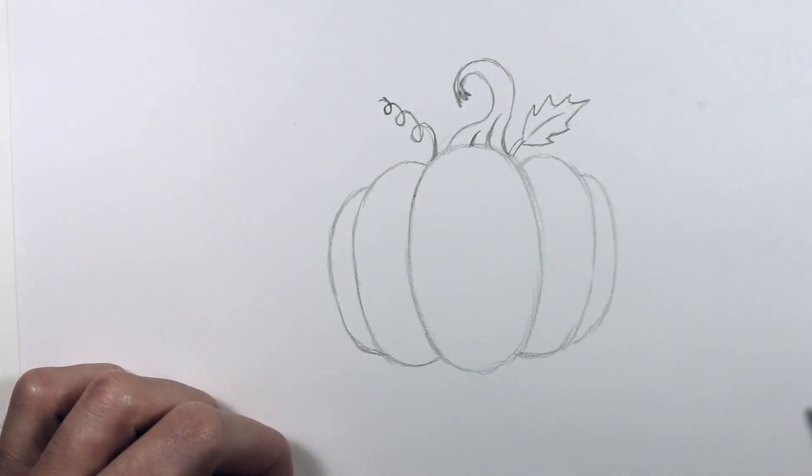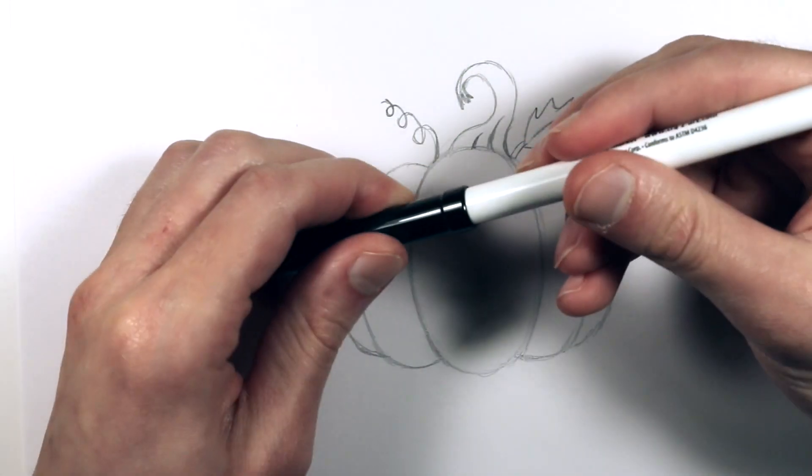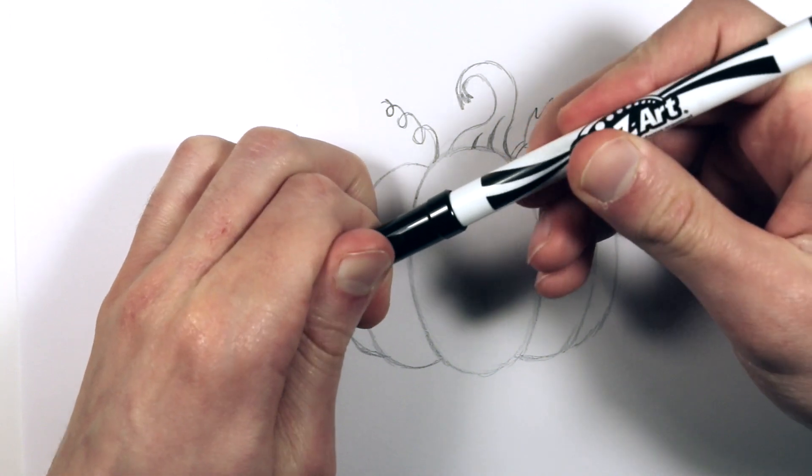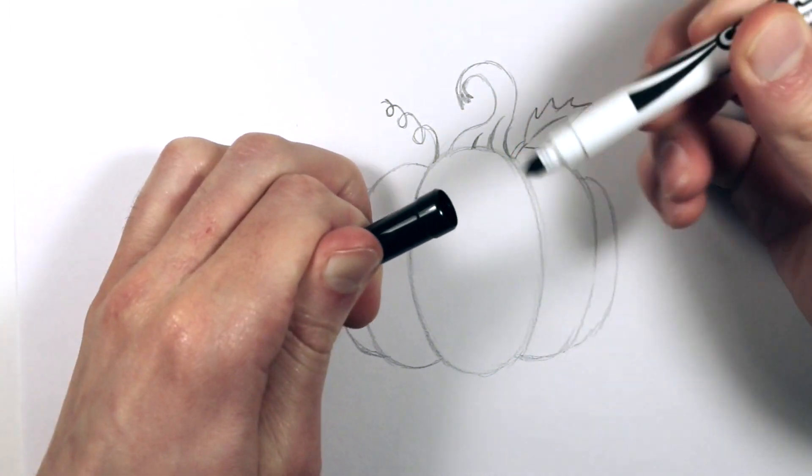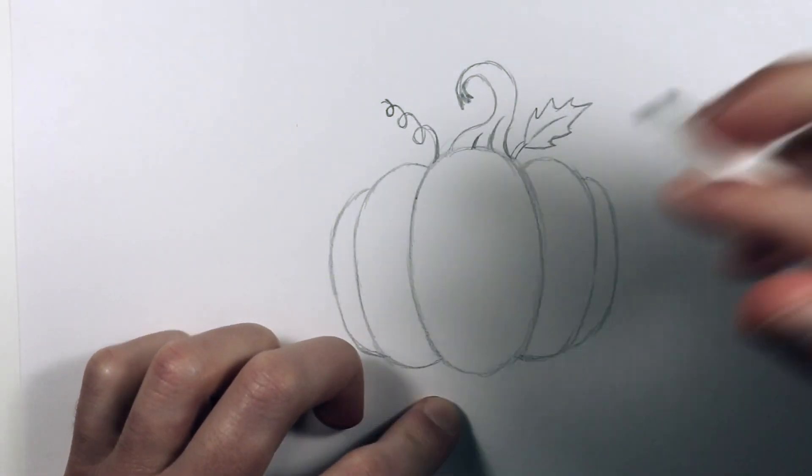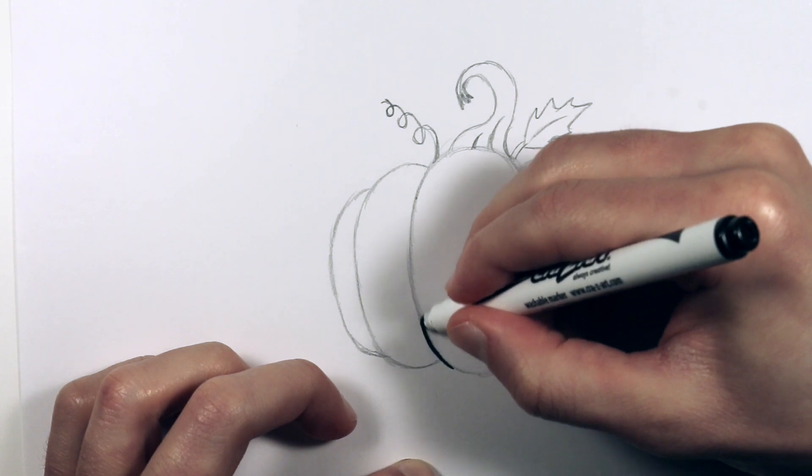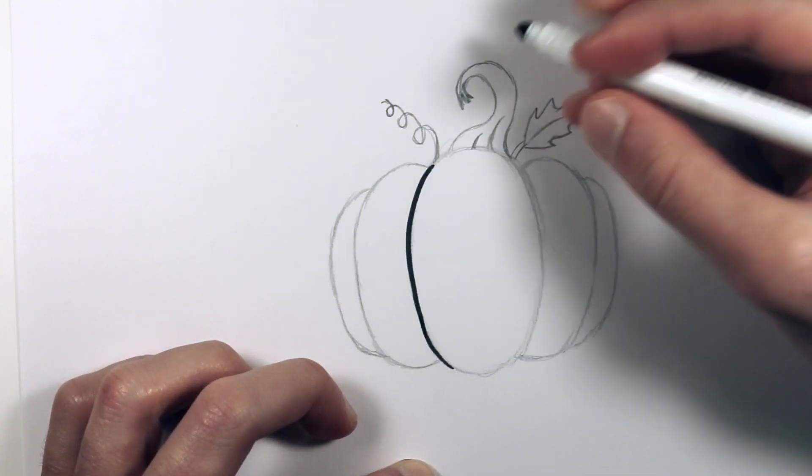All right, so that's the basis of the pumpkin. Now I'm going to fill it in with line work. You can use any material you want—you can paint it, depending on what paper you use—but I'm just using a cheap washable Crazy Art marker. I like cheap markers because I don't have to worry about wasting the ink.